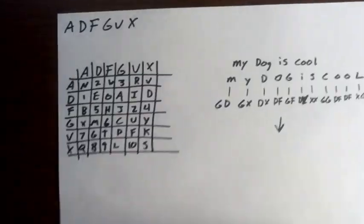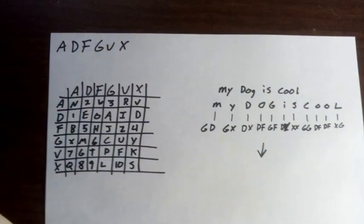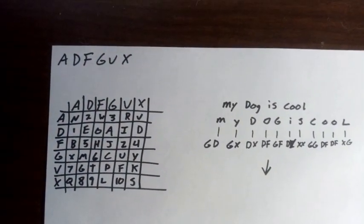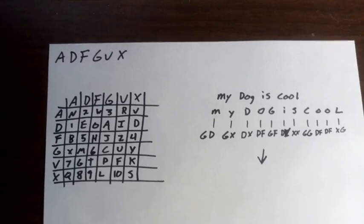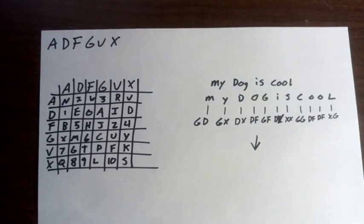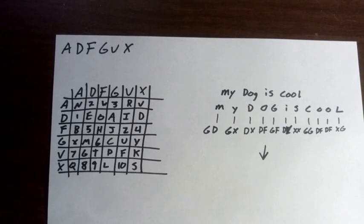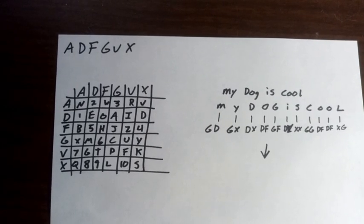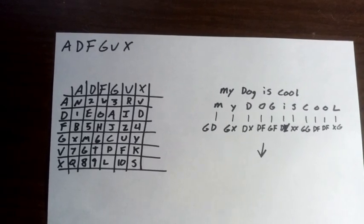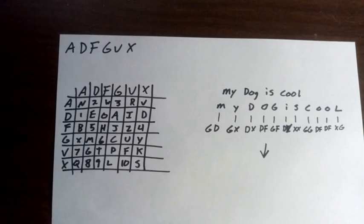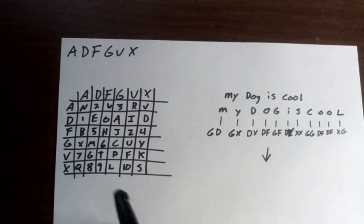This is how it's done. Essentially, what the ADFGVX cipher is is kind of a series of two separate ciphers. The first one is basically just a simple substitution cipher.